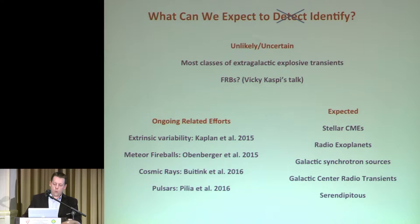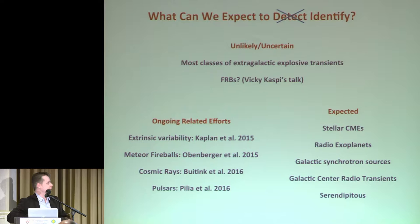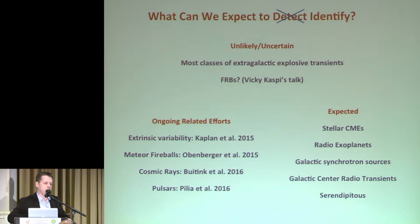For transient science, what can we expect to detect? I completely agree that most classes of extragalactic explosive events will likely not be identified — you can detect them, but they're varying on decades and century timescales, so identification is the problem. Fast Radio Bursts are a question mark; MWA has done surveys and put limits on expected spectral index, and if FRBs are at low frequencies they'd need a very flat spectral index. There are also a lot of reasons — scattering or absorption propagation effects — to expect we won't detect them at low frequencies unless they're very close by.